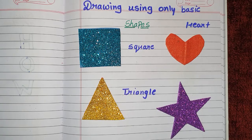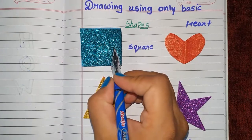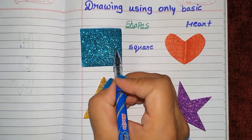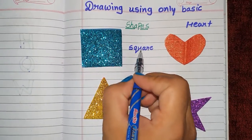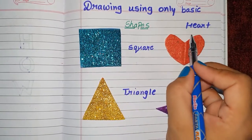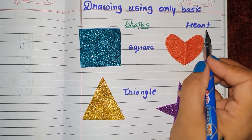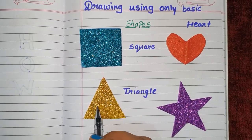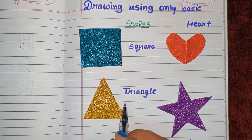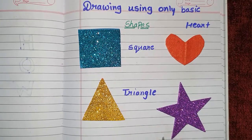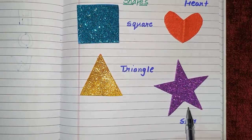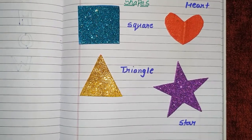First we will learn what basic shapes are. What shape is it? It is a square. What shape is it? It is a heart. What shape is it? It is a triangle. What shape is it? It is a star.